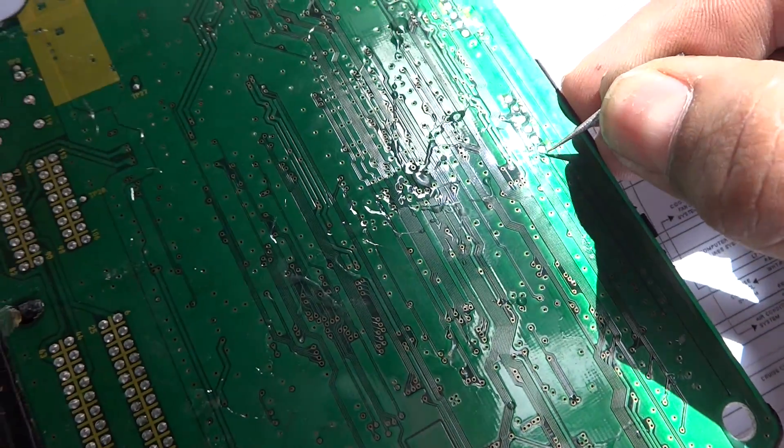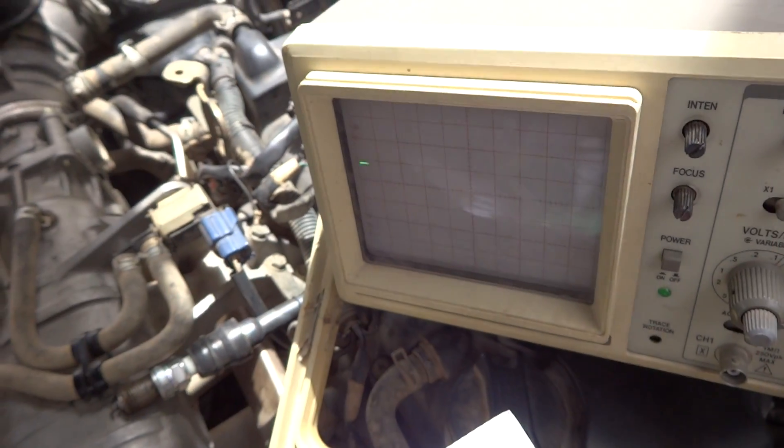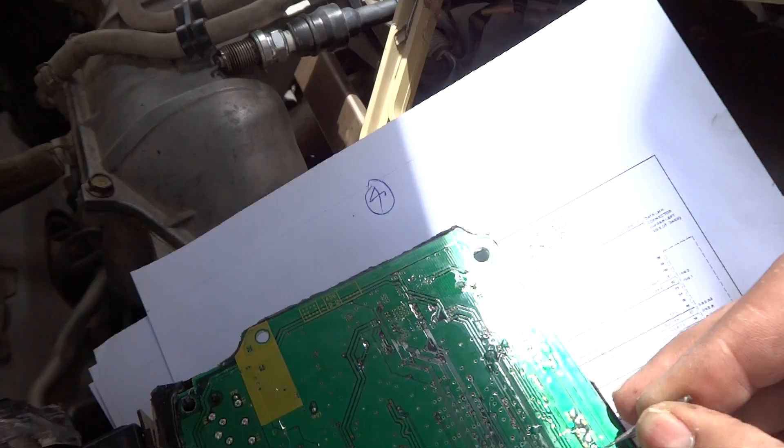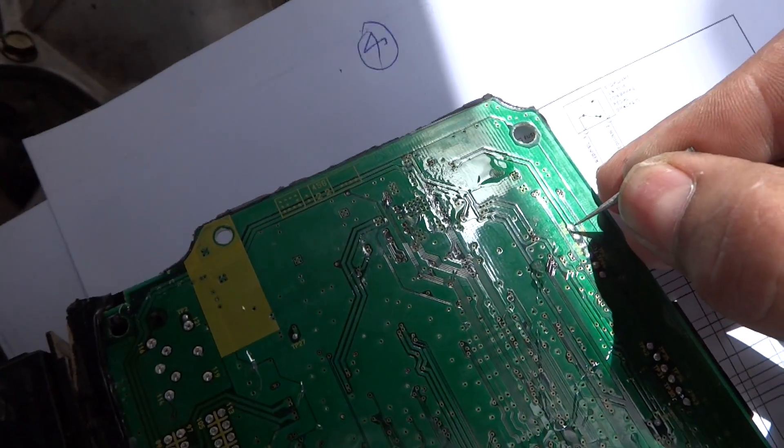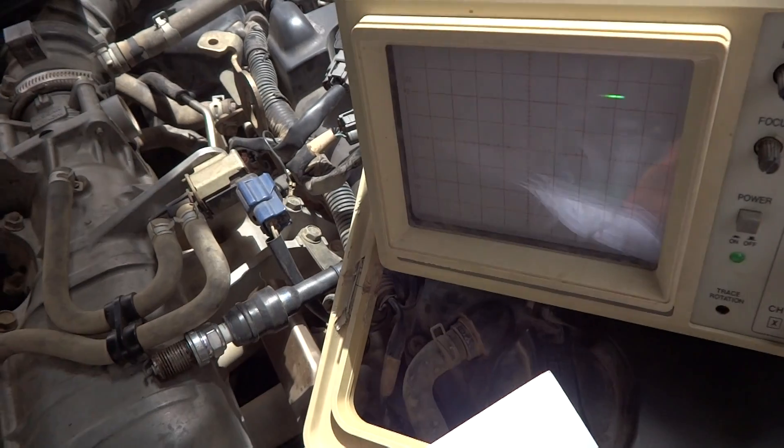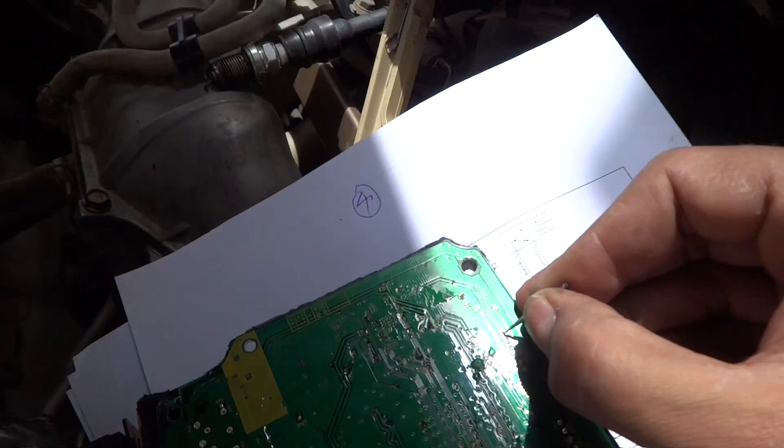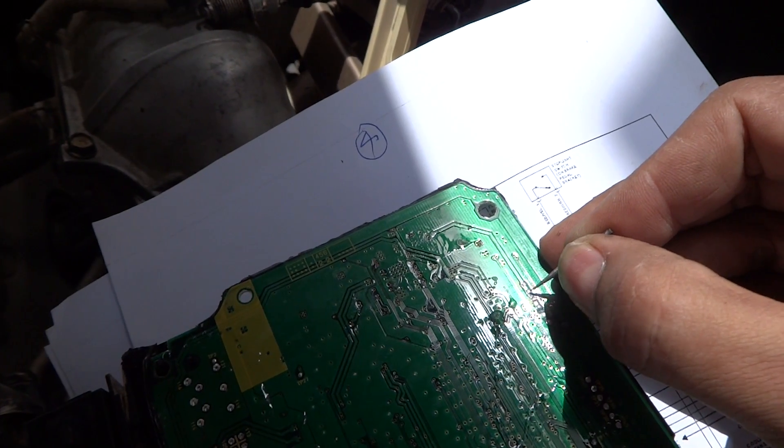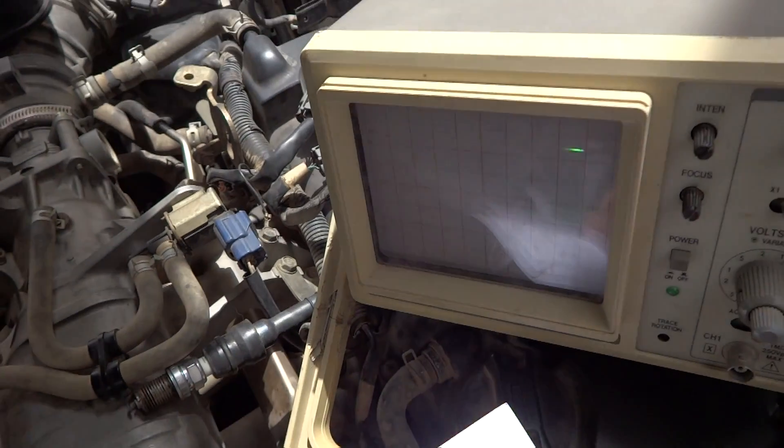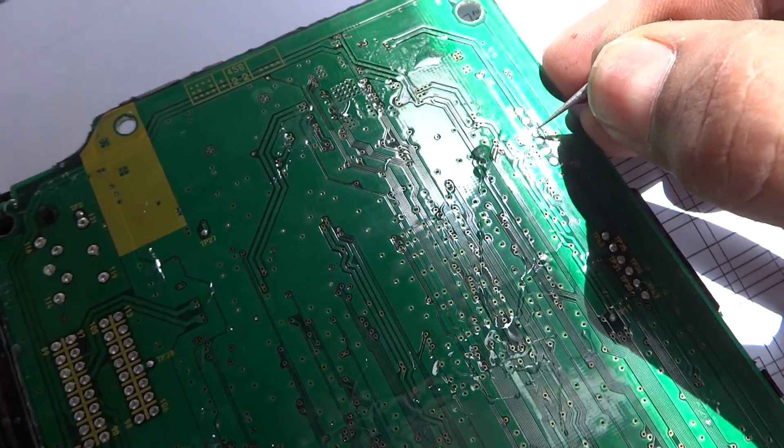Test point 43 is reading 5 volts, also okay. Test point 82 shows 12 volts, which is switch 12 volt. Test point 83 is the same point, 12 volts again.